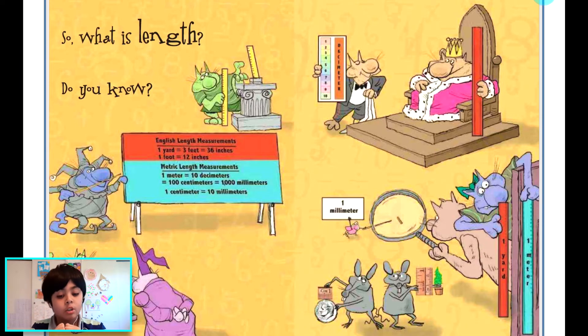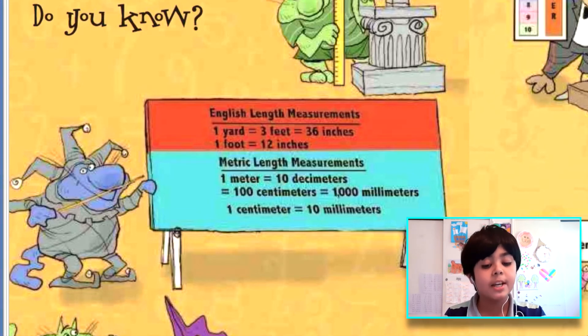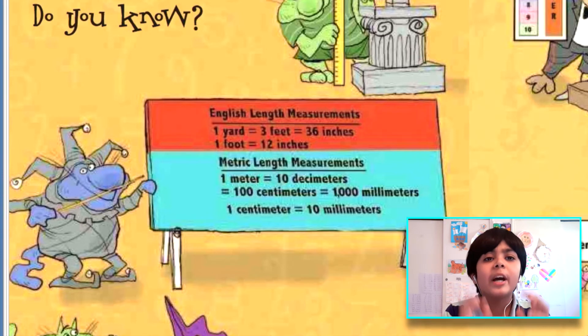And then there's also metric length measurements. In this it doesn't talk about miles and kilometers, but it does other things. It says one yard equals three feet equals 36 inches. One foot equals 12 inches. One meter equals 10 decimeters equals a hundred centimeters equals 1,000 millimeters. One centimeter equals 10 millimeters. So these are things you guys can have. I have this activity for you guys.